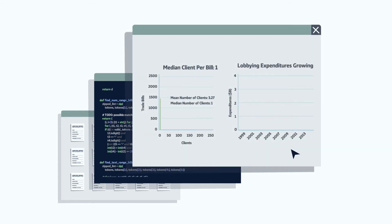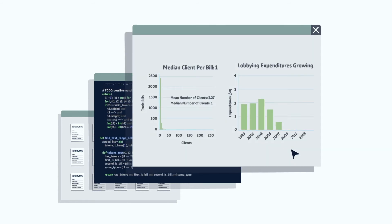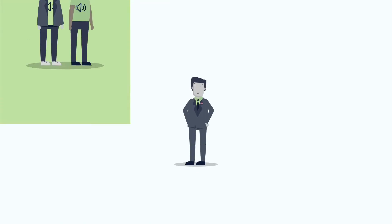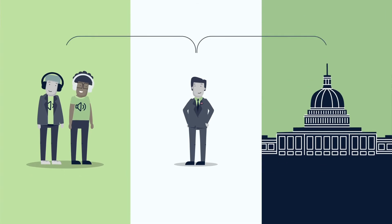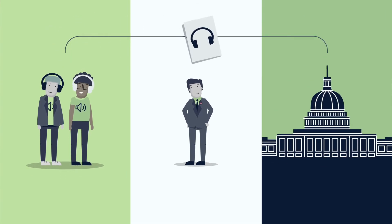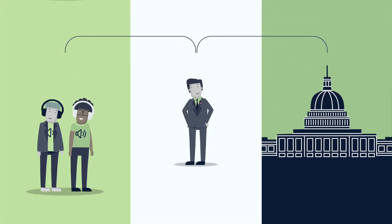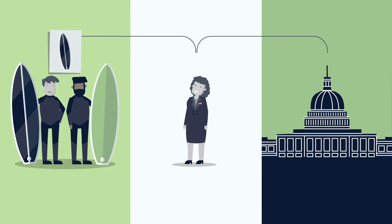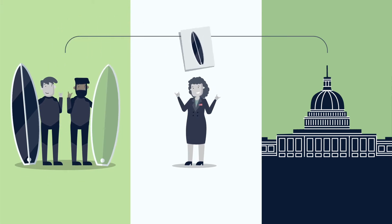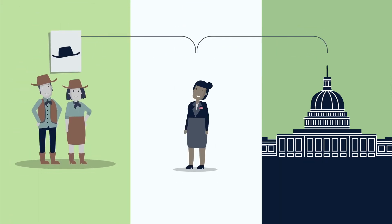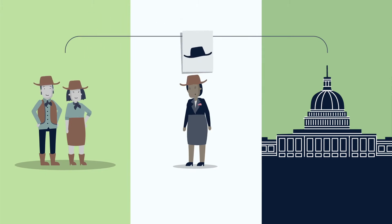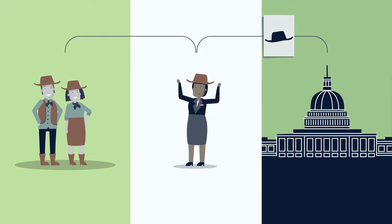The patterns observed in this data are striking. Out of more than 12,000 bills introduced in each Congress, the majority are lobbied by only one or two interest groups. This reflects the targeted private interests involved in legislative politics.